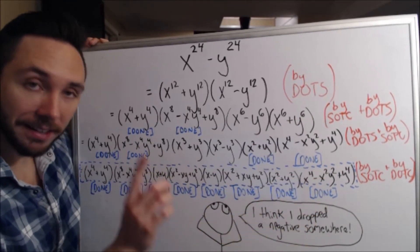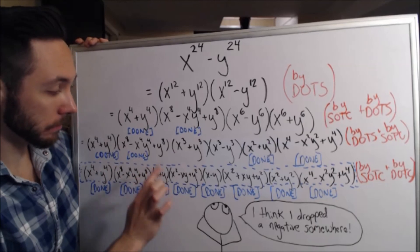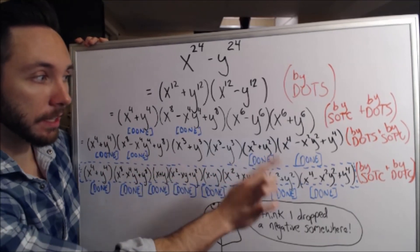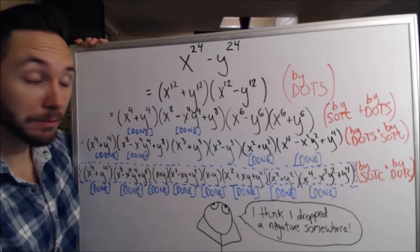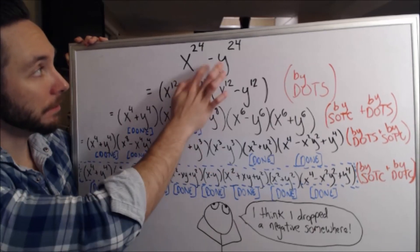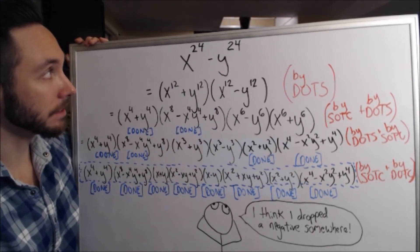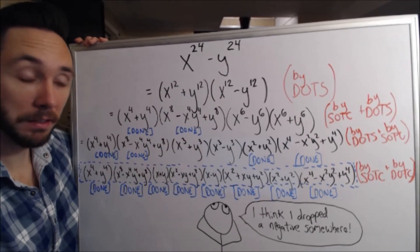Leaving us at a grand total of one, two, three, four, five, six, seven, eight unique factors of this initial expression, x to the 24th minus y to the 24th.